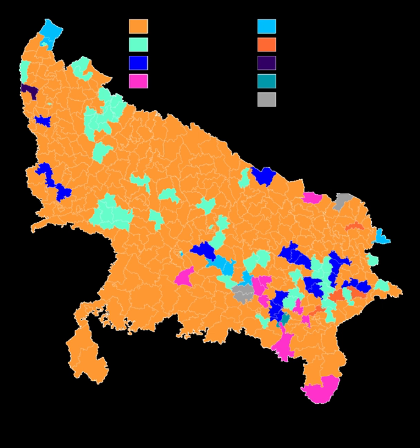Assembly elections in Manipur were held on 4 March and 8 March 2017 in two phases. The result was declared on 11 March 2017.